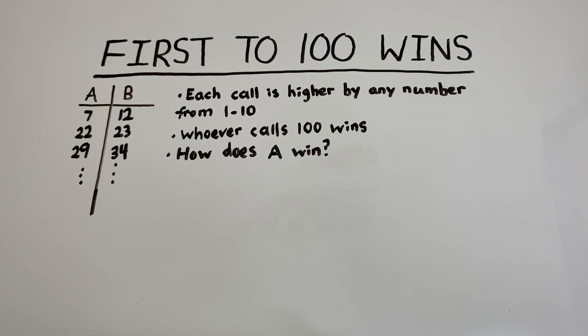Here's how you play. A is going to call any number between 1 and 10 first. So in this case A calls the number 7, then B is going to call a number after A and the number that B calls has to be 1 through 10 higher than the number that A just called. So if A called 7, B could call any number from 8 to 17. In this case B calls number 12 and then the process repeats over and over again.